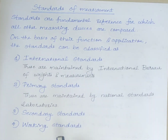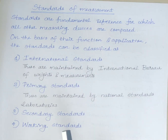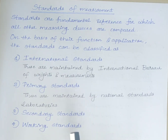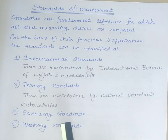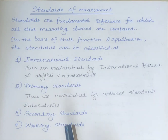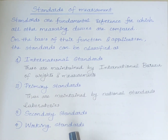The last type is working standards. These are the reference standards used in a measurement laboratory. They are used to check and calibrate general laboratory instruments for their accuracy and performance. Working standards have an accuracy of one order lower than that of the secondary standards.